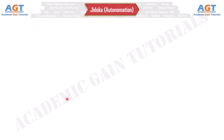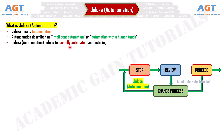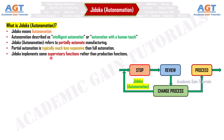Number 3: Jidoka, or Autonomation. Jidoka means autonomation, described as intelligent automation or automation with a human touch. Jidoka refers to partially automating manufacturing, which is typically much less expensive than full automation. Jidoka implements some supervisory functions rather than production functions. In this concept, the machine or line is automatically stopped when defects are detected.